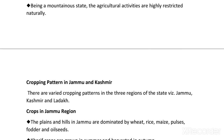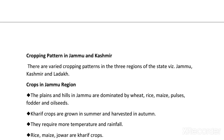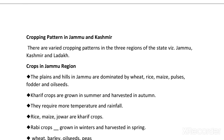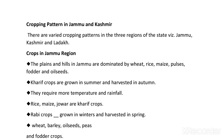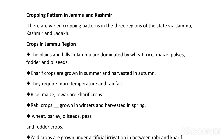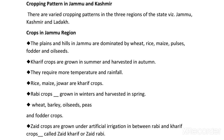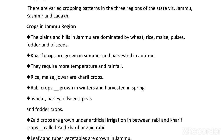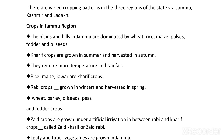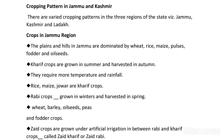Jammu and Kashmir has varied cropping patterns in its three regions — Jammu, Kashmir, and Ladakh. In Jammu region, the plains and hills are dominated by wheat, rice, maize, pulses, food crops, and oil seeds.